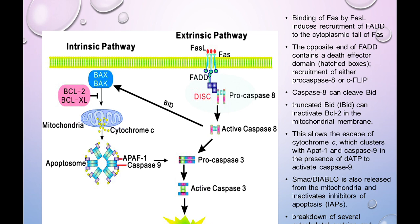In the extrinsic pathway, binding of FAS ligand to FAS induces recruitment of FADD — FAS-associated death domain — to the cytoplasmic tail of FAS. This activates pro-caspase-8, which activates caspase-8. Caspase-8 can then activate downstream caspases-3 and caspase-6, and can also cross-activate the intrinsic pathway. Triggers such as virus or radiation activate the intrinsic pathway, while death receptor signals activate the extrinsic pathway.